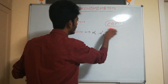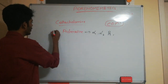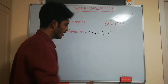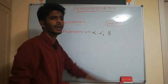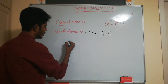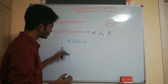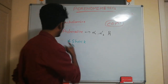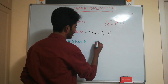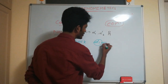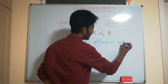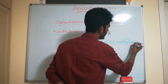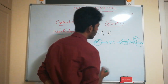Noradrenaline stimulates only alpha 1, alpha 2, and beta 1 receptors, so its main use is during shock. When noradrenaline is administered, it stimulates alpha 1, causing vasoconstriction and increased blood pressure, which helps treat the patient in shock.